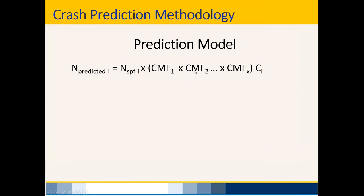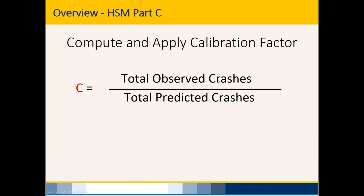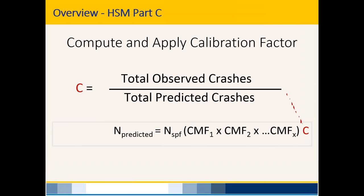Oh wait — the calibration factor. The calibration factor is actually not hard to calculate — it might be the easiest part, despite sounding complex. Basically, you use the appropriate SPF and CMFs to calculate predicted crashes for existing conditions. Then compare: take your total observed crashes, divide by your predicted crashes, and you've got the calibration factor. It's a ratio that scales the overall predicted method formula up or down to match historical crash data — very much like calibrating a traffic simulation model.